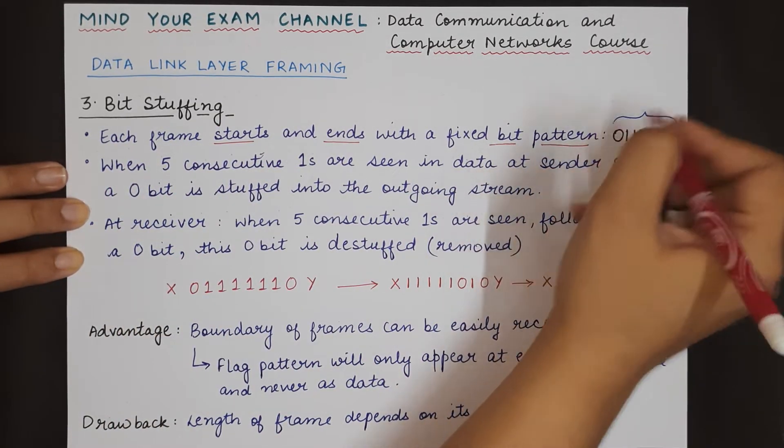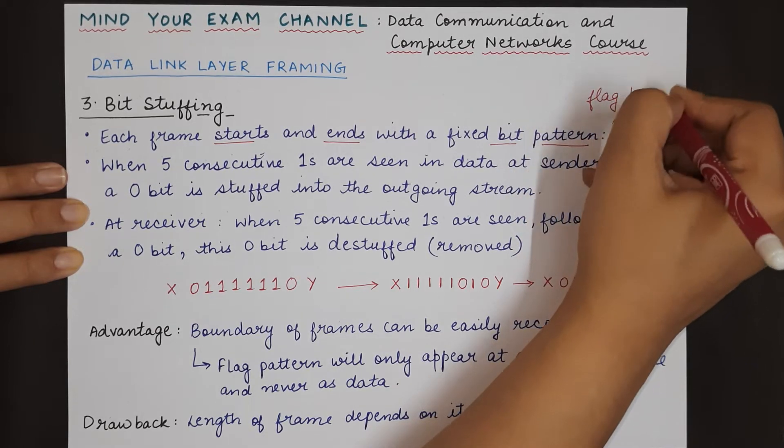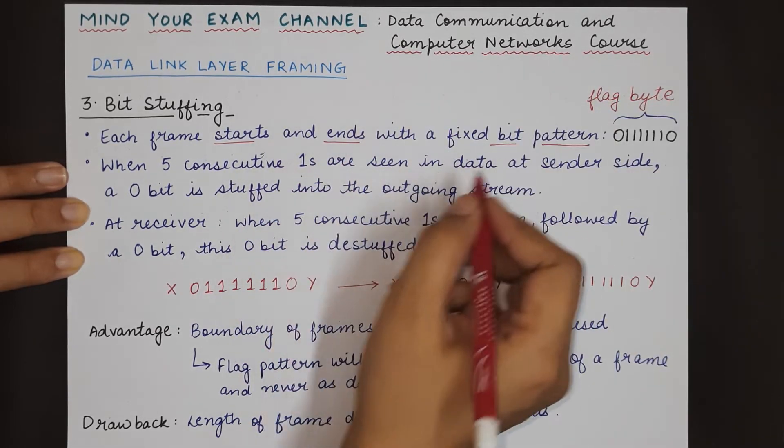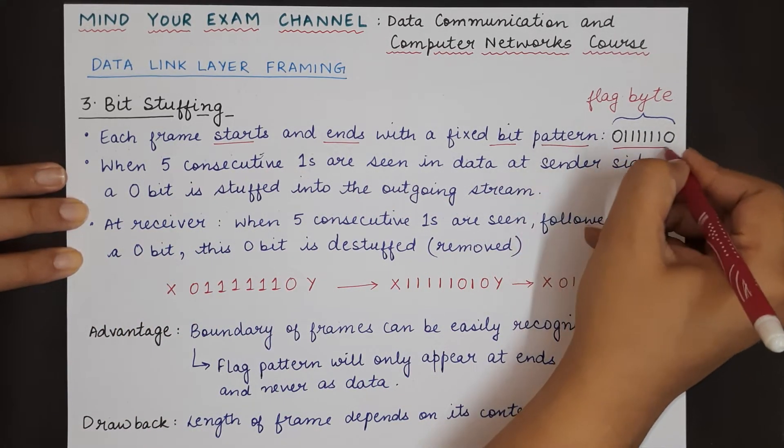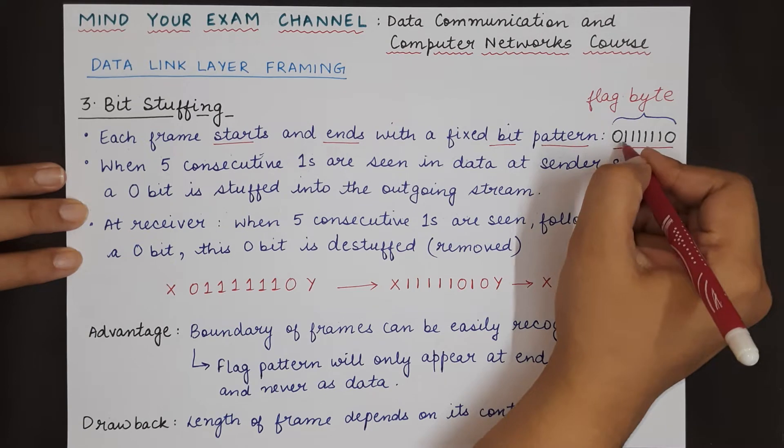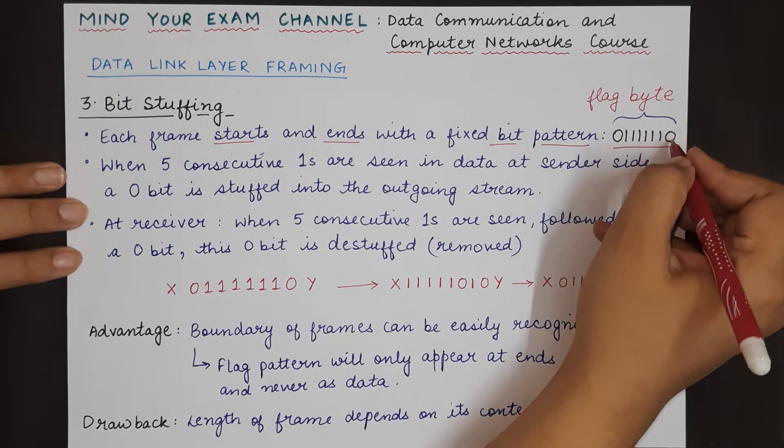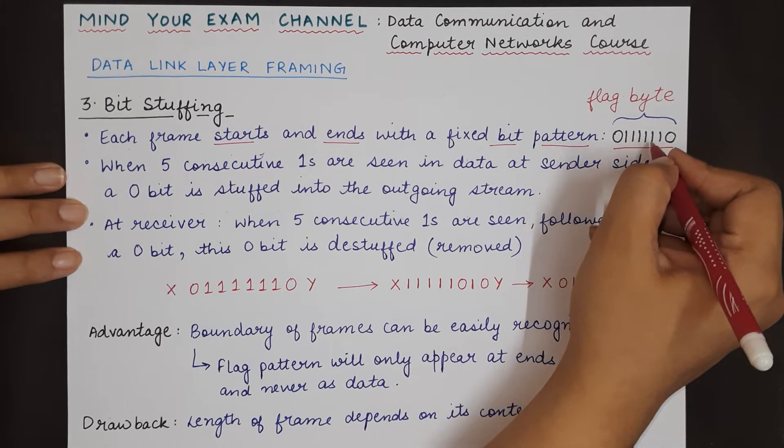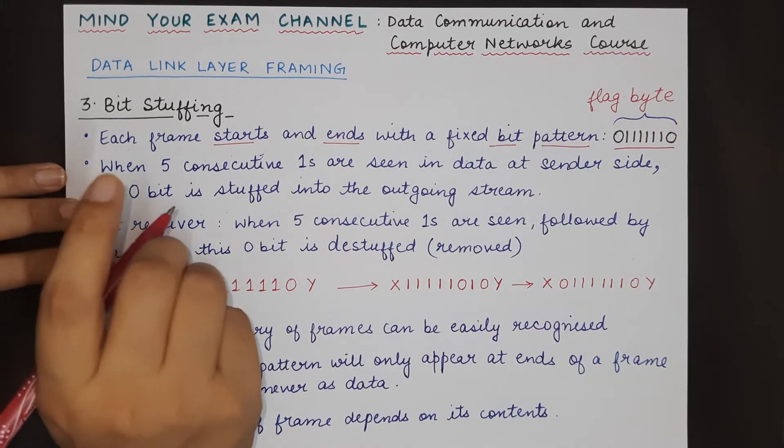In this case there is a particular bit pattern which is known as a flag byte, which is used to start and end a data link layer frame. The pattern looks like this: it consists of zeros at the beginning and the end, a single zero at the starting and at the end, and six consecutive ones.